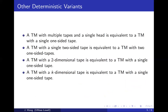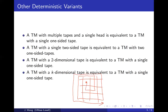A two-dimensional tape is also equivalent because it is unbounded in all directions and you can always start from some point and traverse it as a single one-sided tape. Likewise, a k-dimensional tape is also equivalent to a standard Turing machine, as long as you figure out a way to traverse the k-dimensional tape as a one-dimensional tape. Since we're at a high-level description, we don't need to work out every detail.